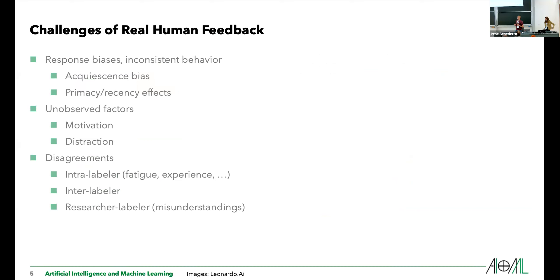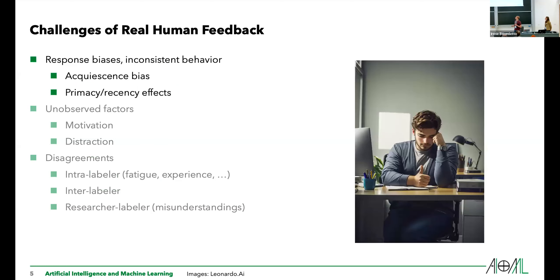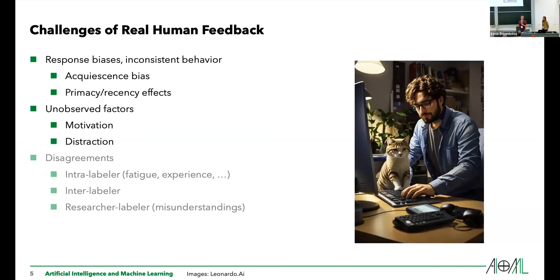I will start by introducing some of the challenges of real human feedback. The first one is that humans have many biases and inconsistent behavior. A human doesn't give feedback in a perfectly reward-rational way. For example, they have an acquiescence bias — a tendency to just agree with the default choice. You can also observe recency effects, so the fact that they pay increased attention to what's happening at the beginning and the end. This somewhat violates our earlier assumption that they give reward-rational feedback.